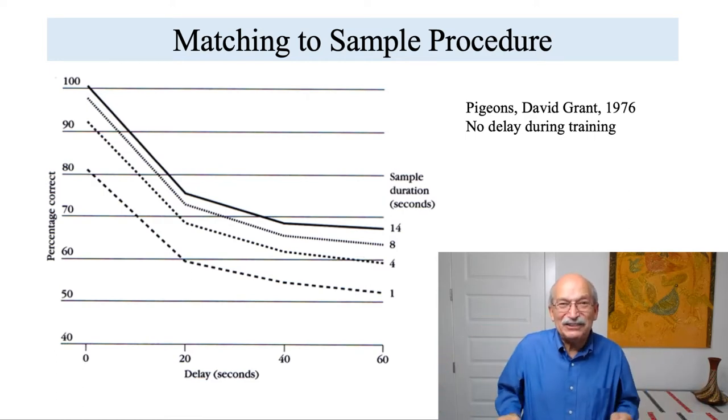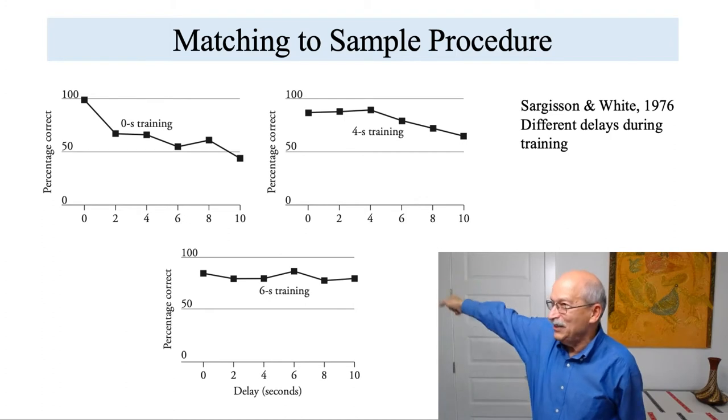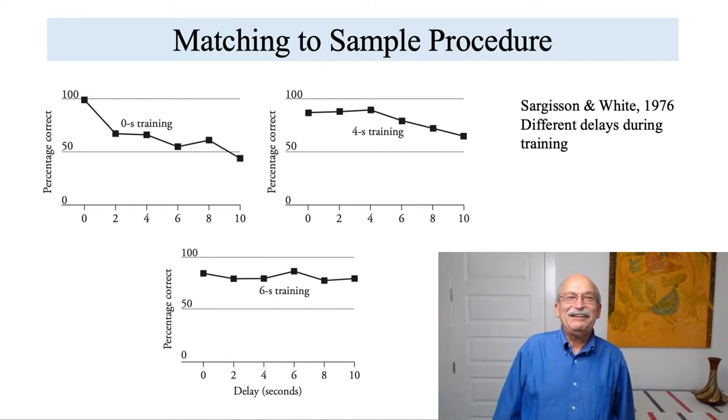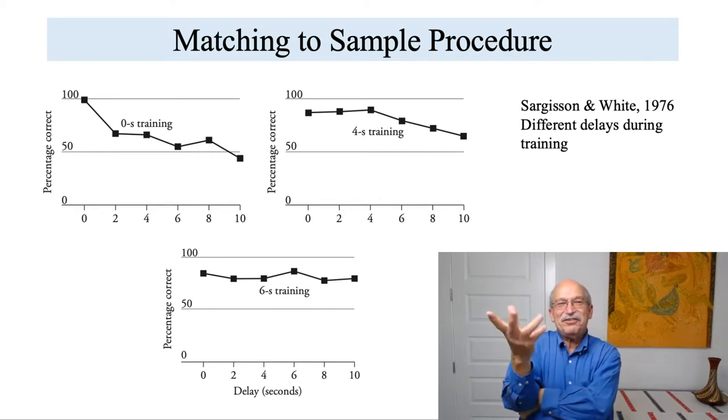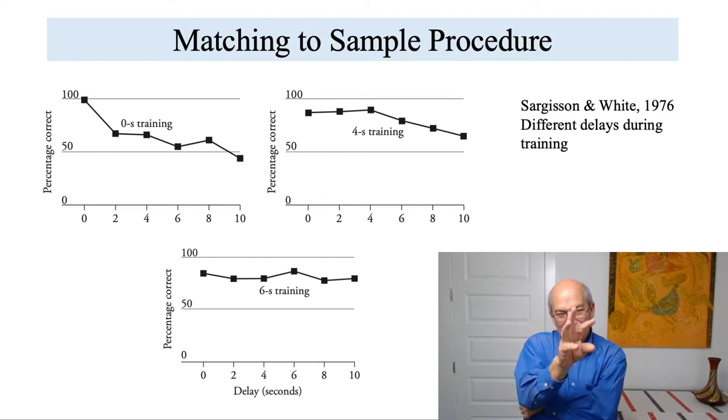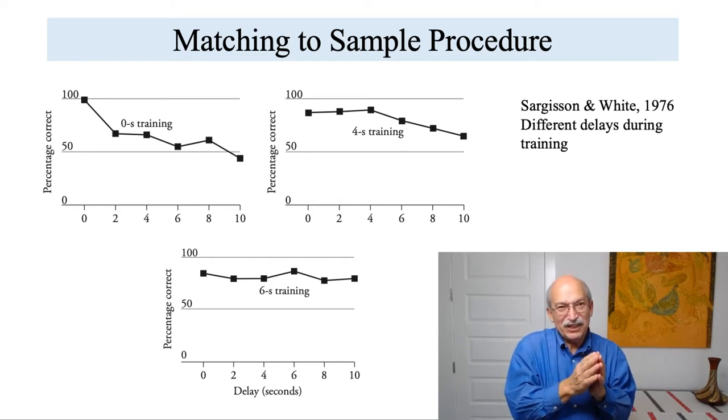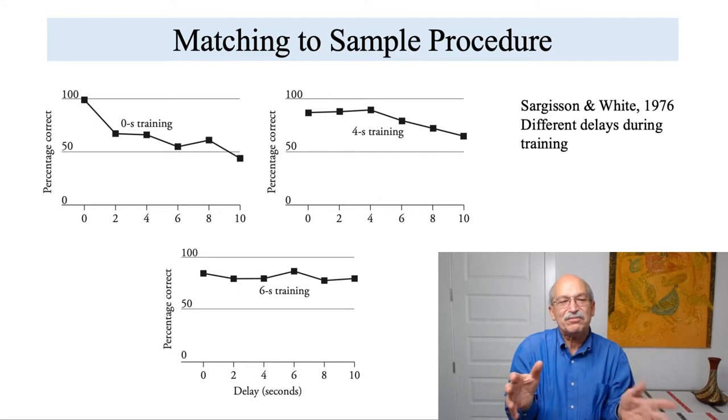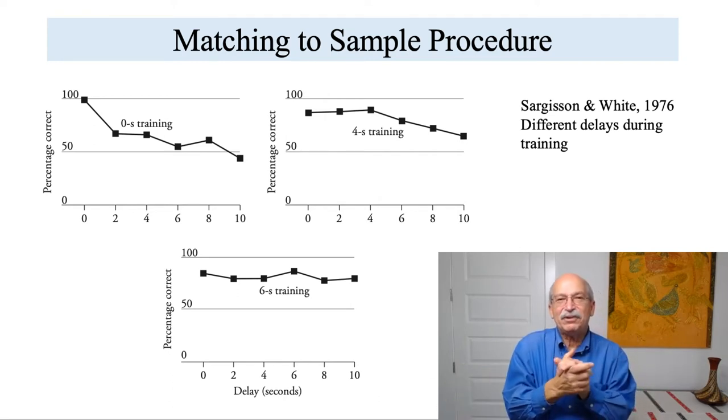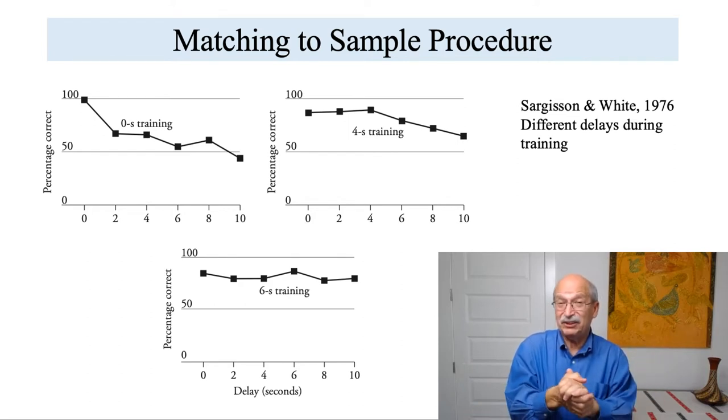Well, the next experiment points us in a different direction. The next experiment, whose data are shown in the next slide, these are data collected in New Zealand. We travel the world in studies of conditioning and learning. So here there are three groups of pigeons shown. And they were trained with different delays between the sample stimulus and the choice alternative during the training phase. And once they all achieved about 90% accuracy, then they were given this test series where the delay was varied from zero to 10 seconds.